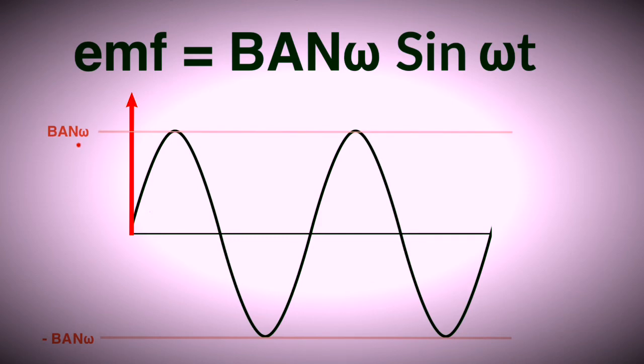It runs to plus and minus BANω and it has the shape of a sine wave. So this is your max EMF. If you're ever asked for the max EMF and you know the details of how it's moving, what its magnetic field is, what the area of the coil is, how many turns and what omega it's doing, then you should be able to find a max EMF.